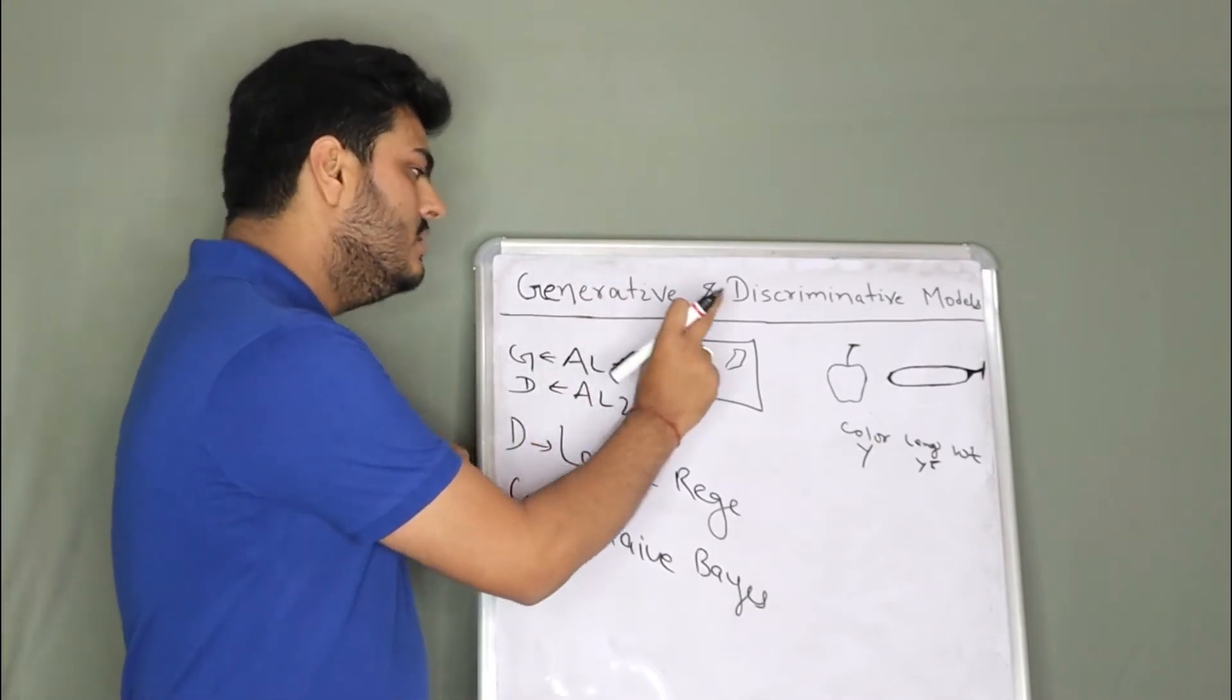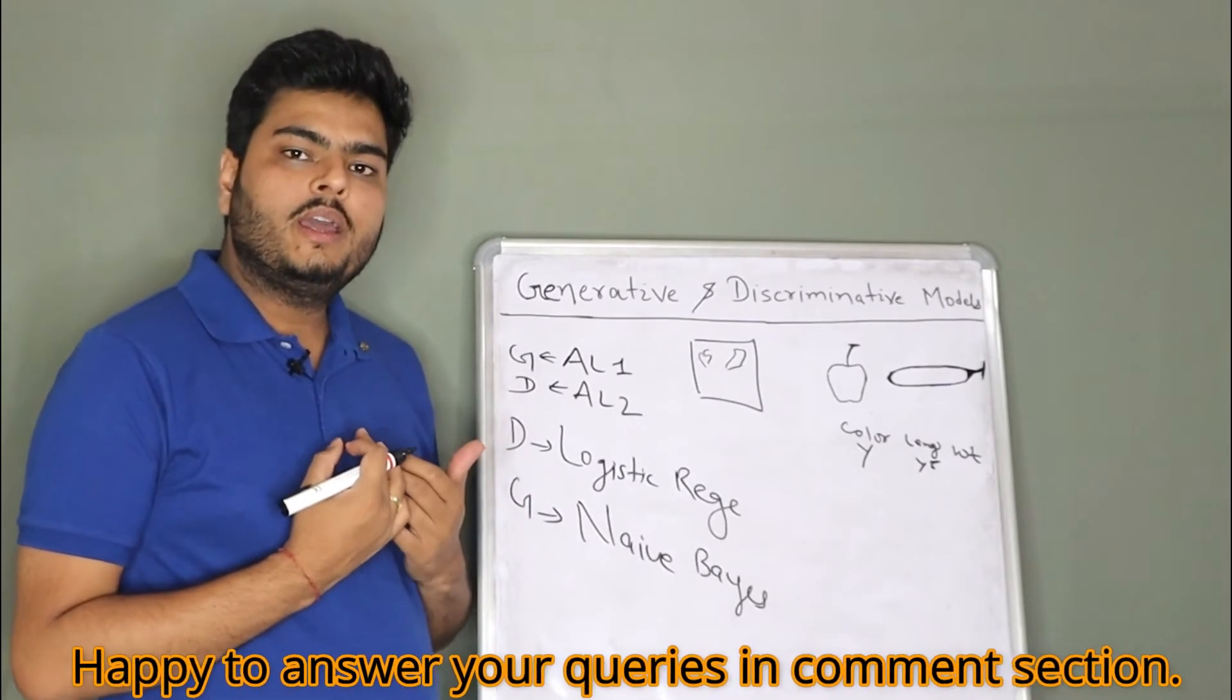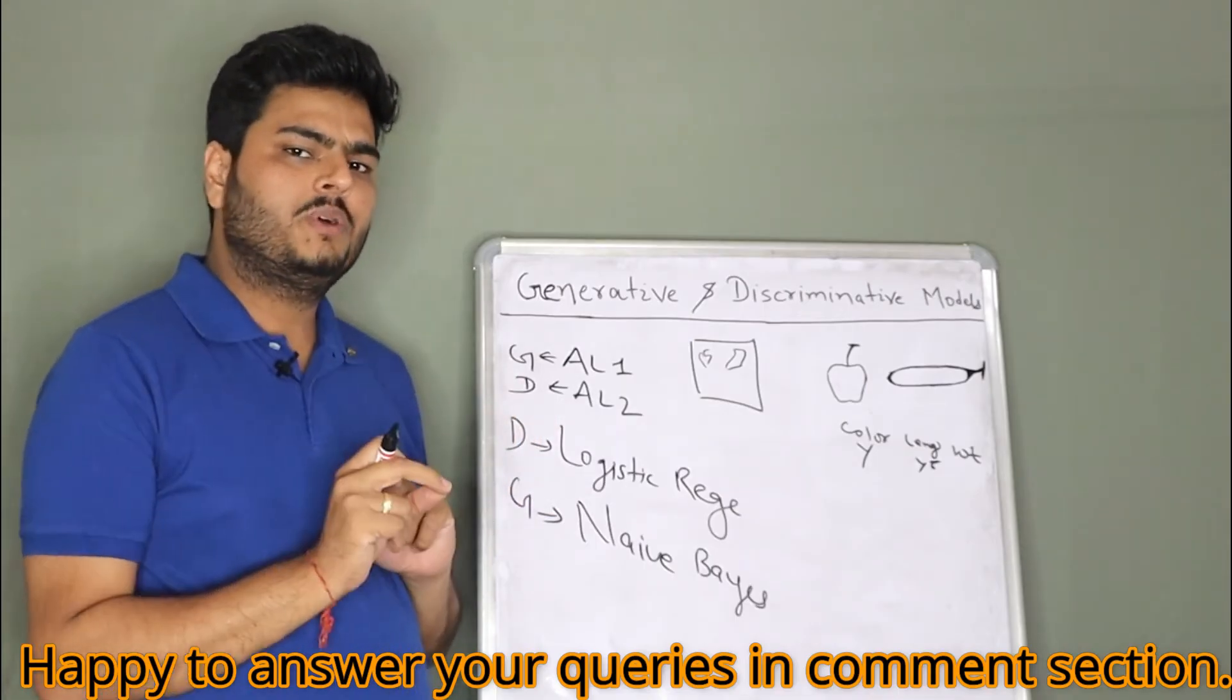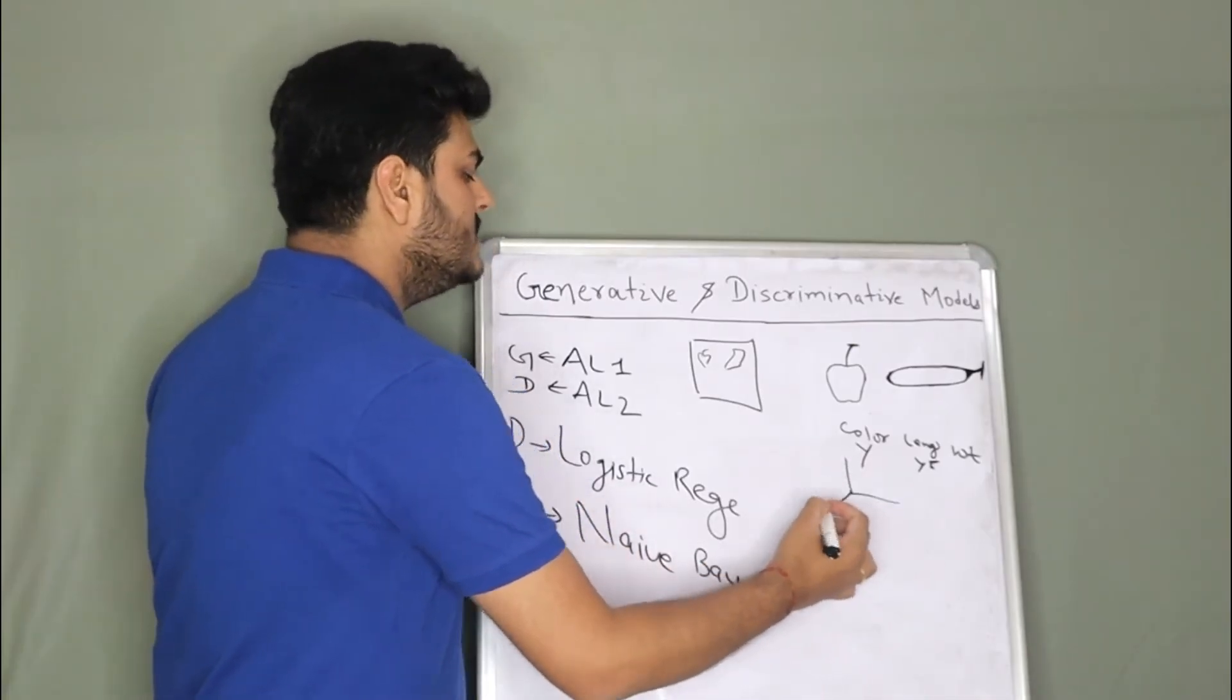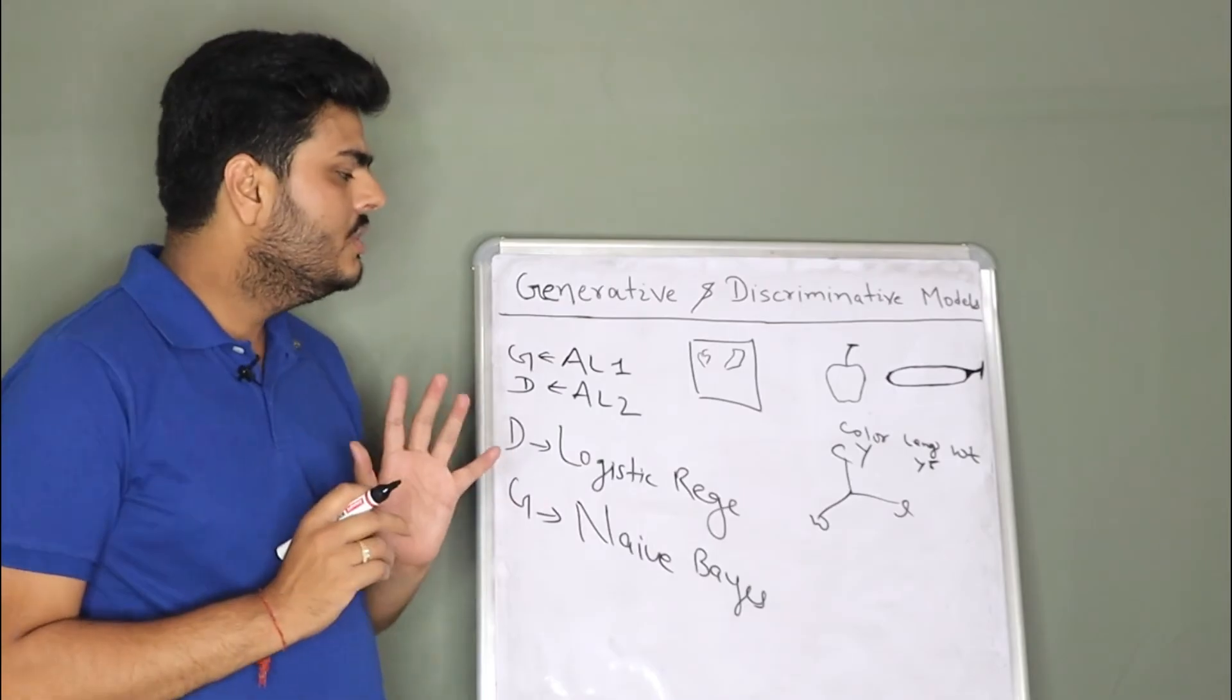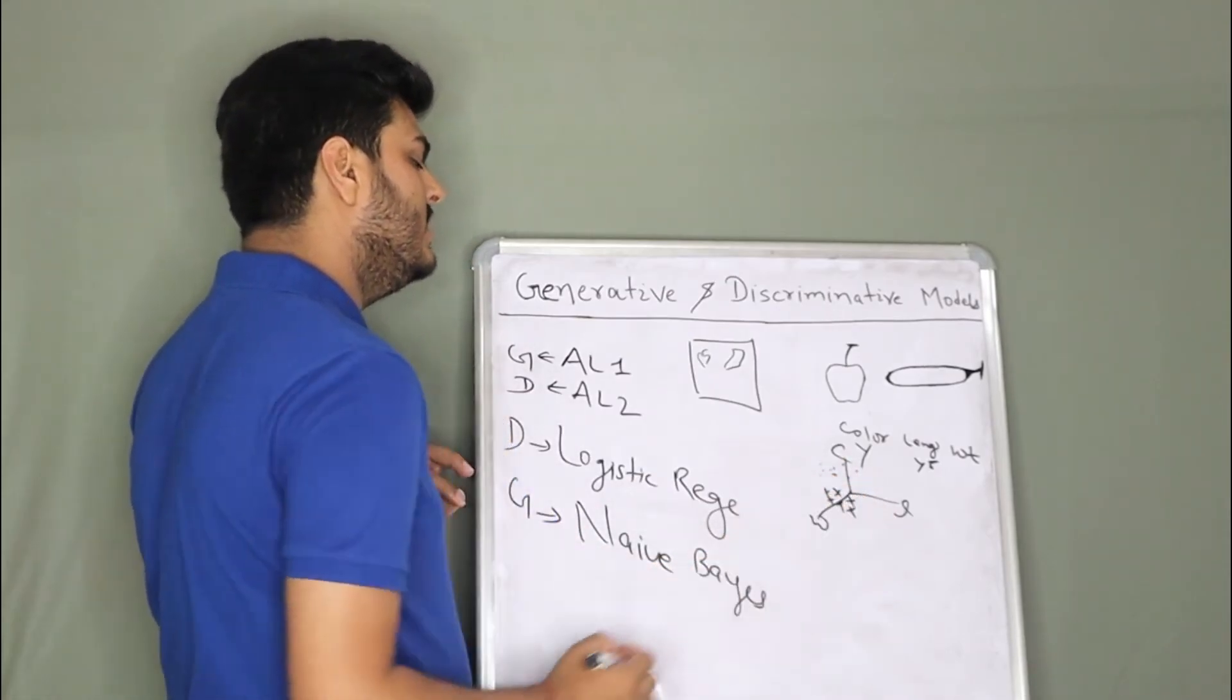Now, what is generative learning? In generative learning, the model internally will try to find the distribution of both the classes in an n-dimensional plane. Let me give you a simple example. How many features we are talking about here? Three features. So let's say we can draw this in an n-dimensional plane like this. One can be color, one can be length, one can be weight. Now let's say these are the points of apple and these are the points of banana.